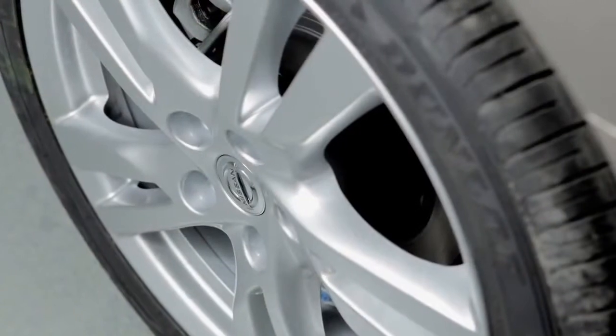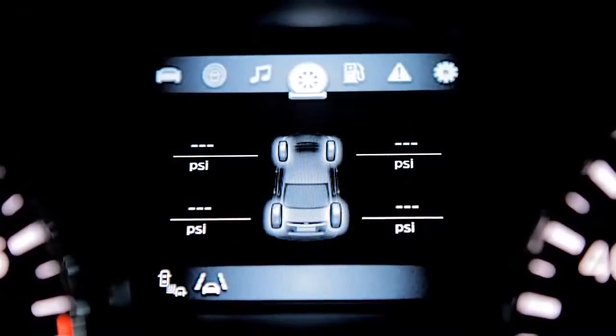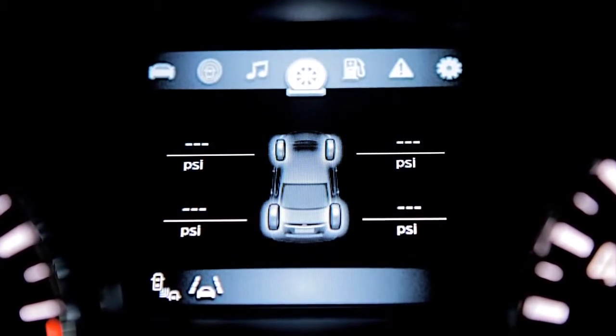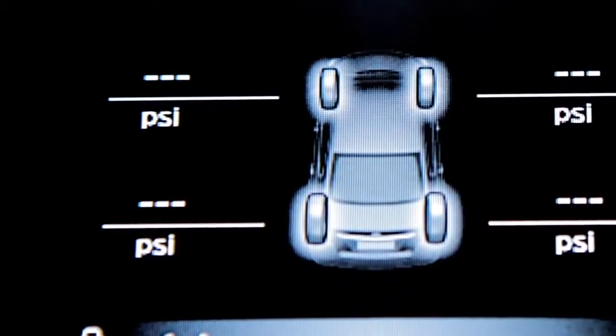If so equipped, you can check the pressure of all tires except the spare tire on the vehicle information display screen. The order of the tire pressure figures displayed on the screen corresponds with the actual order of the tire position.